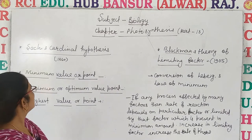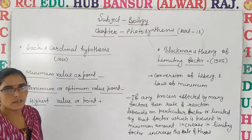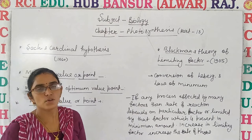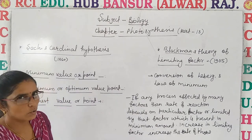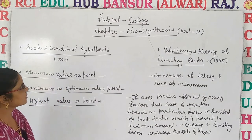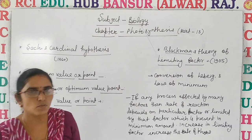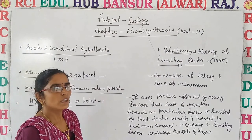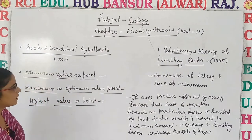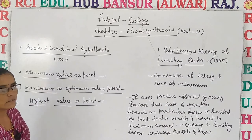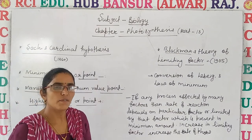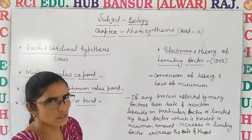One is Sachs' Cardinal Hypothesis and another is Blackman's Theory of Limiting Factor. According to Sachs' Cardinal Hypothesis, which he gave in 1860, he explained that the amount of factors can affect the rate of photosynthesis.